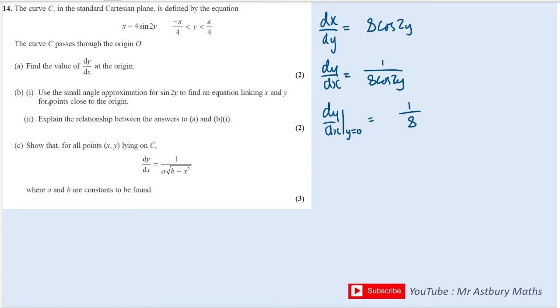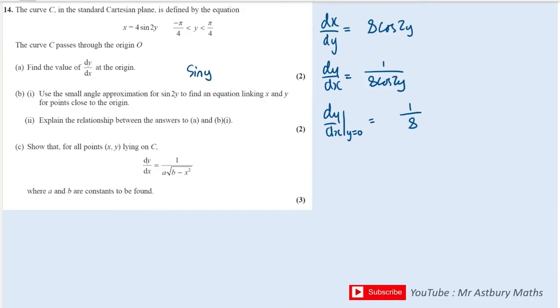Part B says use the small angle approximation for sine 2y to find an equation linking x and y for points close to the origin. Well, first off, the small angle approximation for sine y is just y, so the small angle approximation for sine 2y is just 2y.